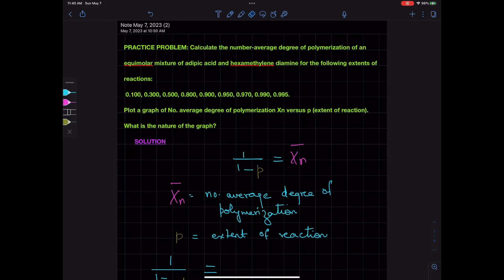In this video, we are going to learn to calculate number average degree of polymerization from extent of reaction. Calculate the number average degree of polymerization of an equimolar mixture of adipic acid and hexamethylenediamine for the following extents of reactions.